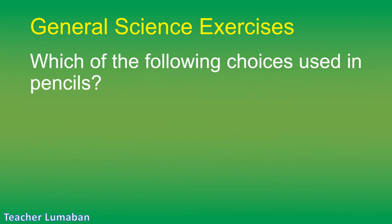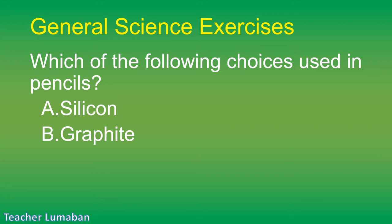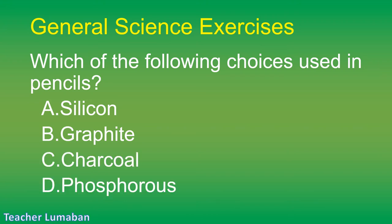Which of the following is used in pencils? Letter A: silicon. Letter B: graphite. Letter C: charcoal. Letter D: phosphorus.